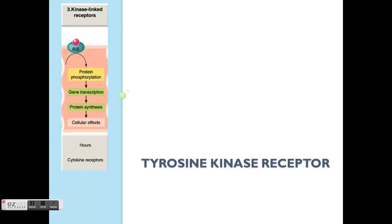Tyrosine kinase receptors fall under the third part of the original diagram, the kinase-linked receptors. The special part of this group is that it involves gene transcription and also protein synthesis. Because it requires the factory to do some work to produce something new, that's why it takes hours for the effect to occur.